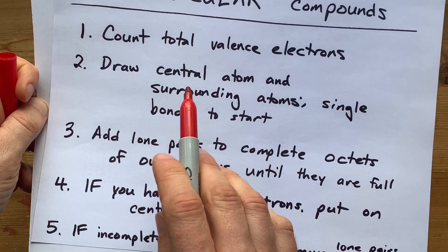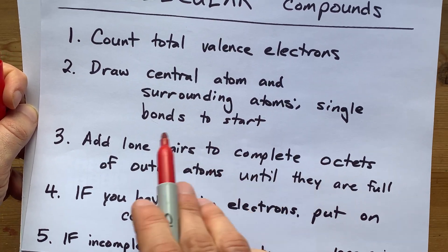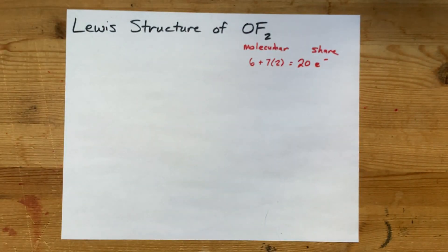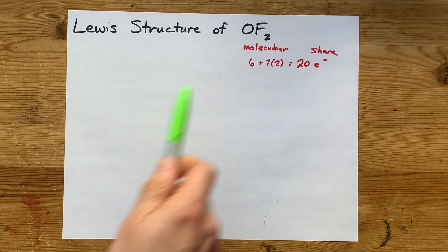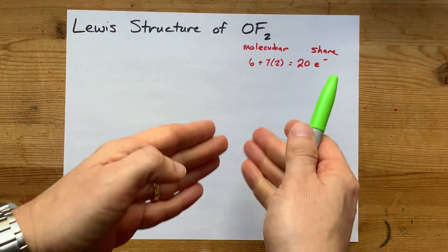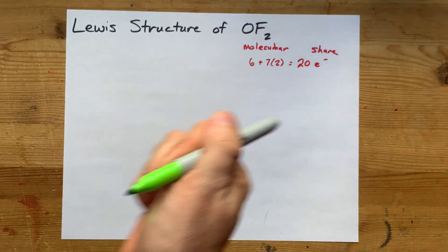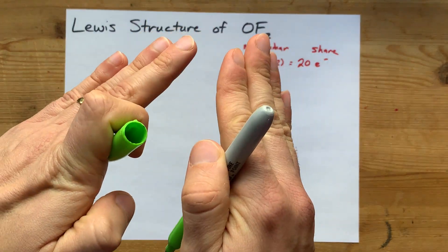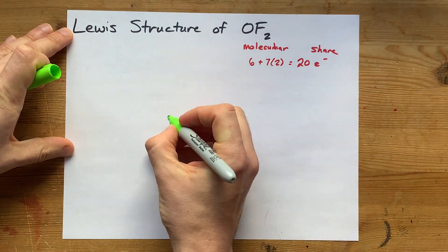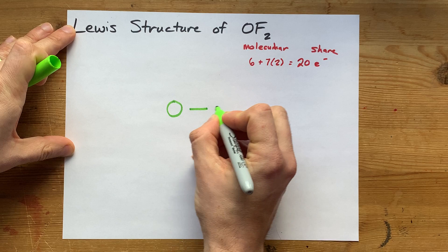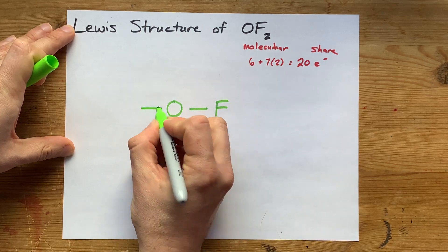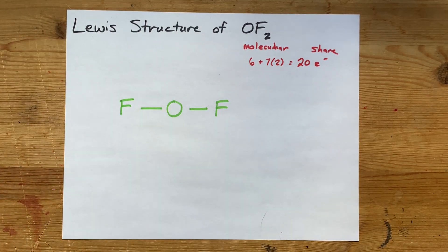We're going to draw the central atom and the surrounding atoms with single bonds to start. Usually the central atom is the one written first in the formula, especially when there's only two atoms written. So I'm going to put my oxygen there, single bond it to a fluorine on this side, and single bond it to a fluorine on that side.